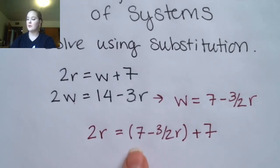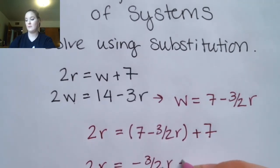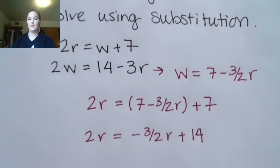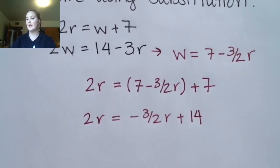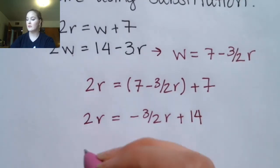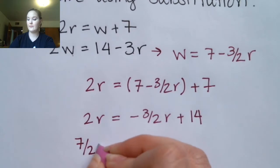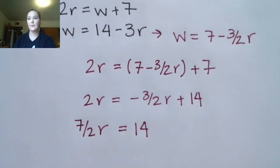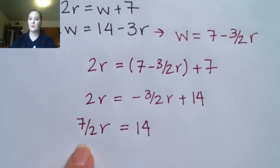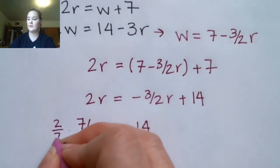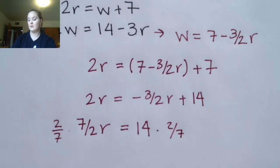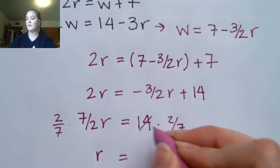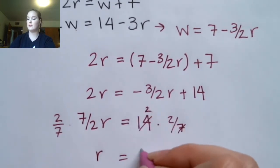Now I'm just going to combine like terms — 7 plus 7 is 14. Then I'm going to combine these two terms by adding three-halves R to both sides, and then multiply by the reciprocal, which is 2 over 7. Here they're going to cancel and we just get 1R, and the 14 cancels with the 7 — 2 times 2 is 4.